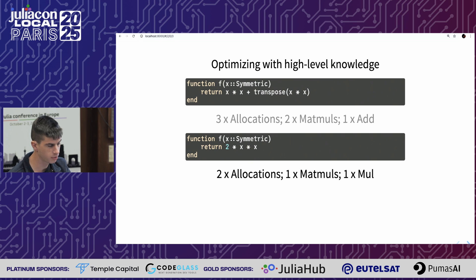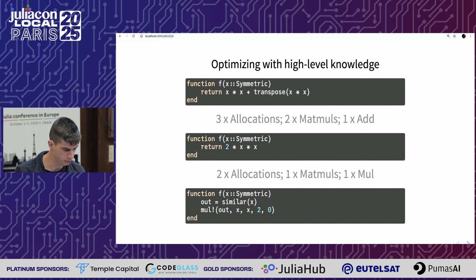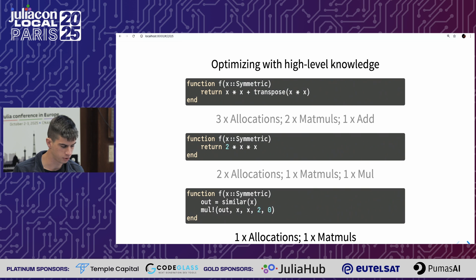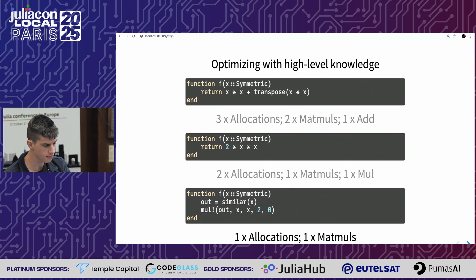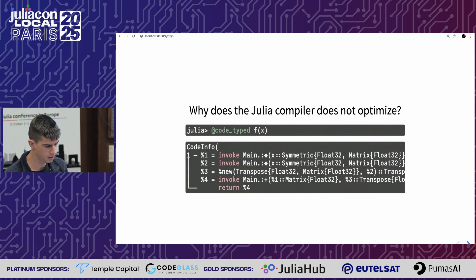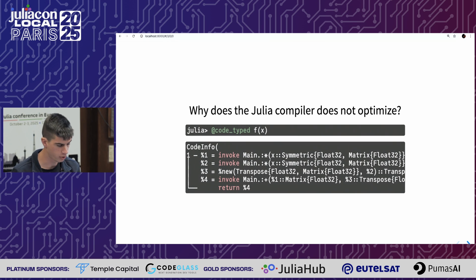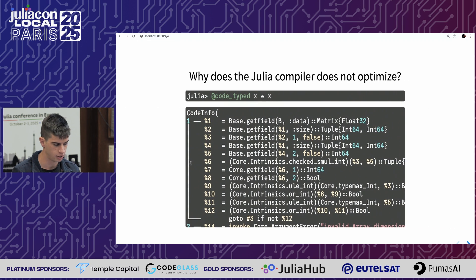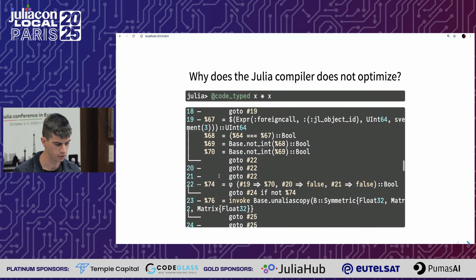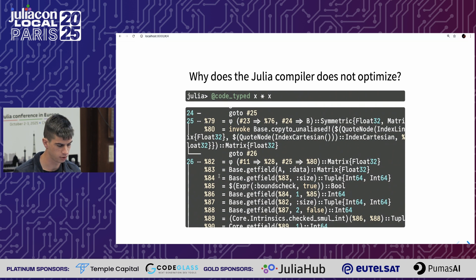That is already much better, but if you are a hardcore Julia developer, you know of a method called mul! and you can actually perform all of this in just one allocation and one matrix multiplication, which is the ultimate way to formulate the same result. The question is: why doesn't the compiler do this for you? The Julia compiler does not have a full view of the program, and there are no rules specific to matrix multiplication, so it cannot reason about these things.